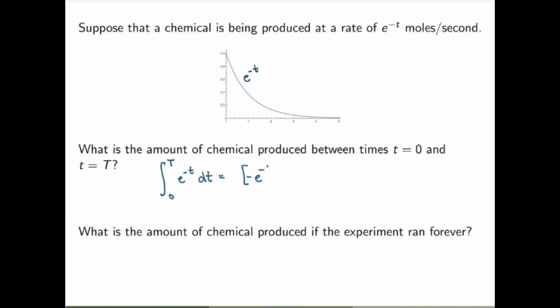You get minus e to the minus t between zero and capital T, which is just minus e to the minus capital T minus minus e to zero, or in other words, one minus e to the minus capital T. That is the exact amount of chemical produced between these two times.